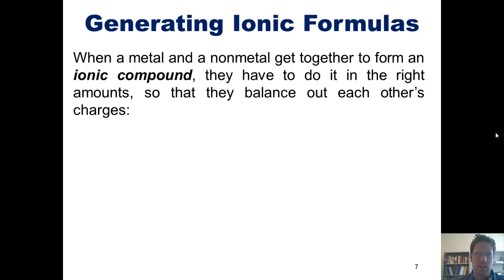So when a metal and a non-metal get together to form an ionic compound, they have to do it in the right amount so that they balance out each other's charges. For example, let's pretend that we had a metal A with a charge of plus x, getting together with a non-metal B, which has a charge of minus y. How many A's will have to combine with how many B's to give us a balanced ionic formula? Although we could do some convoluted math here if we wanted to, there's a simpler way to generate an ionic compound's formula. All we have to do is just use the x as a subscript for B and the y as a subscript for A. This gives us the formula of A subscript y, B subscript x, as indicated here.